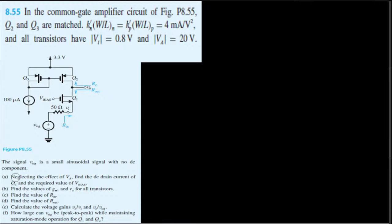Neglecting the effect of V_A, find the DC drain current of Q1 and the required value of V_bias.